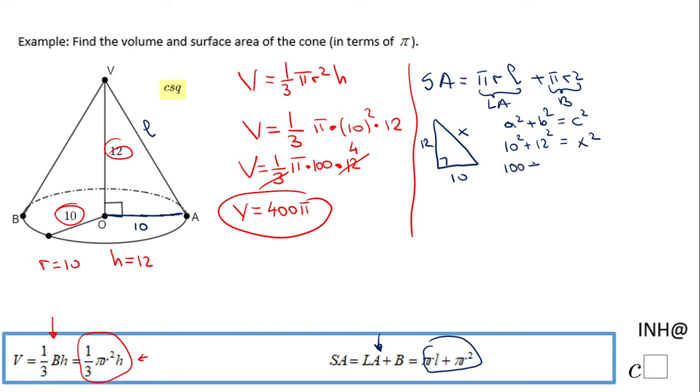100, that is 10 squared, plus 144, which is 12 squared, equals x squared. So x squared will be 244. In order to find x, I'm going to take the square root.